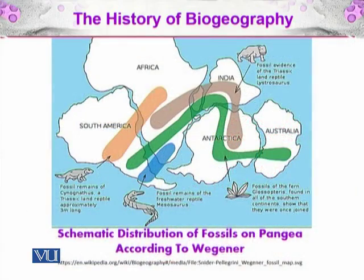Here you can see the schematic distribution of fossils on Pangaea according to Wegener. Pangaea is the first mega-continent that was present on the surface of Earth. South America and Africa were joined, and Antarctica, India, and Australia were also joined. You can see different fossils across this reconstruction and all of these fossils have connections.